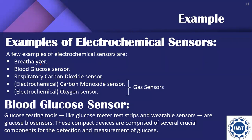Examples of electrochemical sensors include the breathalyzer, blood glucose sensor, respiratory carbon dioxide sensor, carbon monoxide sensor, and oxygen sensor, which are actually gas sensors.